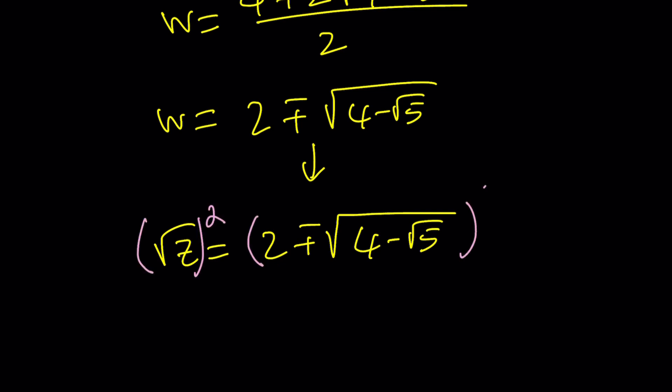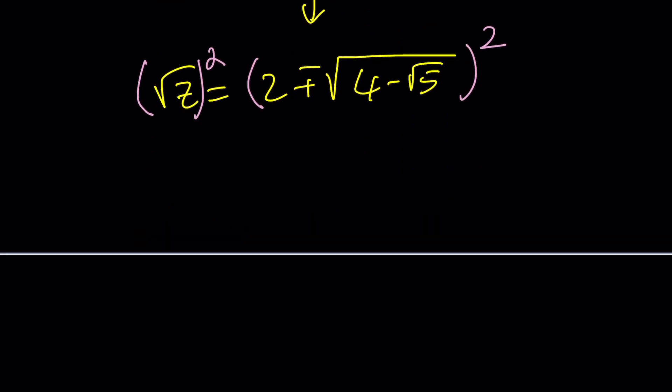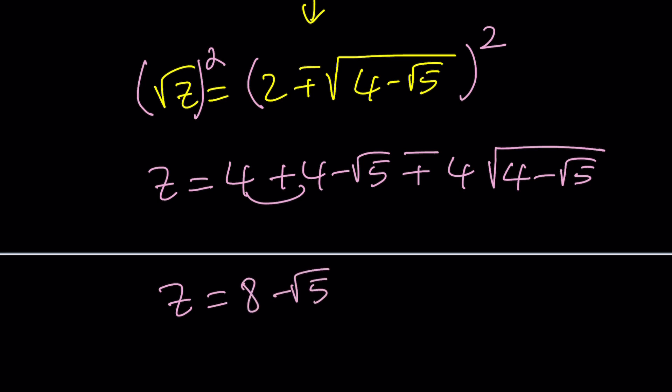And square both sides. And of course, you need to consider both cases, maybe. Or we could just do it at once. Square the first term, square the second term, and then ± 2ab thing, right? The 4 times √(4 - √5). And then from here, we get z = 8 - √5 ± 4√(4 - √5).